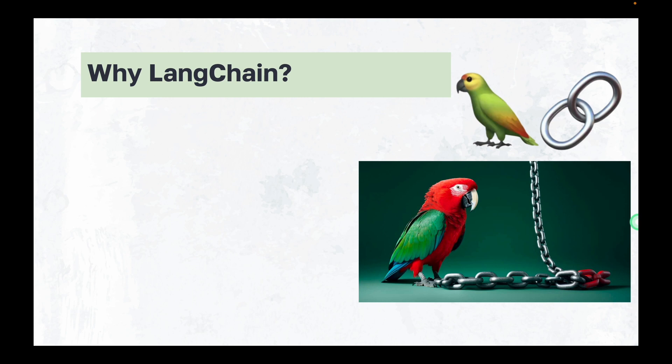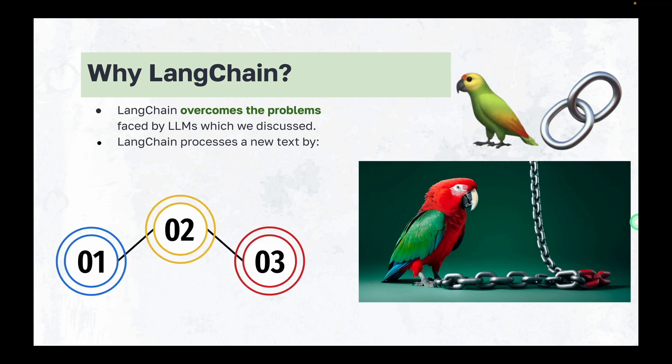First and foremost, LangChain overcomes the problem of hallucination and generalized nature which is faced by LLMs which we already discussed. LangChain provides a practical method to process new text by breaking it down into smaller parts or chunks or summaries, converting them into vectors and then searching for similar parts when new questions are asked.